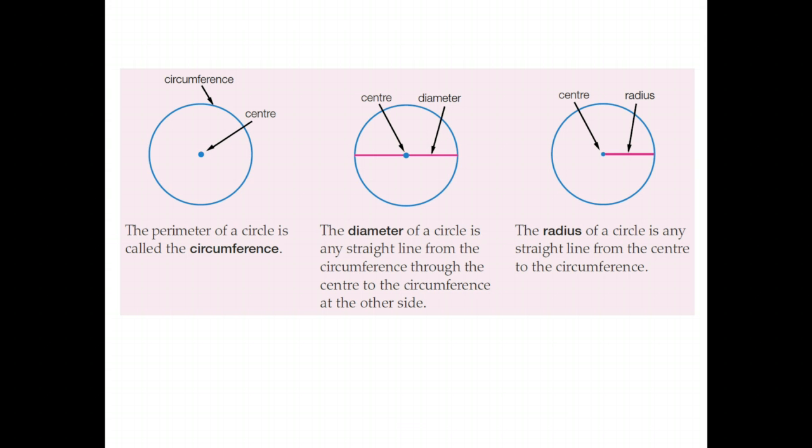First off, let's have a quick look at some of the terminology related to circles. This is just a quick review. The distance around the outside of a circle is called its circumference. Every circle has a center and all the points on a circle are the same distance away from the center.